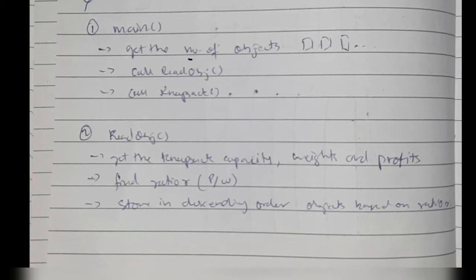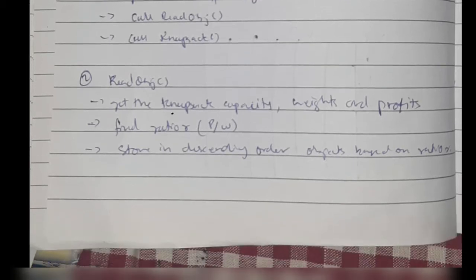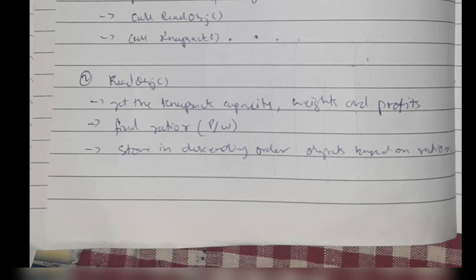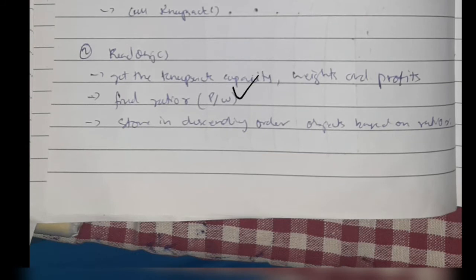In the main function, you get the number of objects, then we call two functions: readObject and knapsack. ReadObject gets the knapsack capacity — the total capacity of the container — the weights of each object, and the profits associated with them. The ratio will be found out as p divided by w, and then the objects will be stored in descending order.